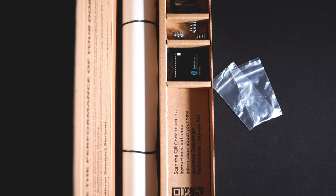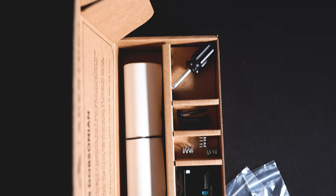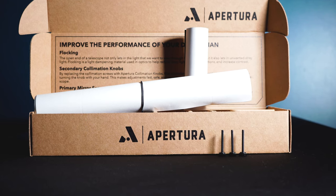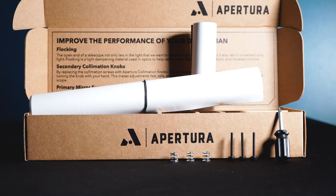So let's talk briefly about what comes inside of the box. The Apertura Dobsonian Performance Upgrade Kit comes with several items. First, you have two sheets of black flocking paper. Additionally, you have collimation knobs, a screwdriver, primary collimation springs, and cleaning wipes. And of course, our very own QR code which may have brought you to this video.